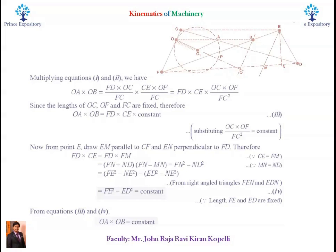Therefore, finally, from right angles F-E-N and E-D-N, we will be getting F-E square minus E-D square is equal to constant, since length F-E and E-D are fixed.